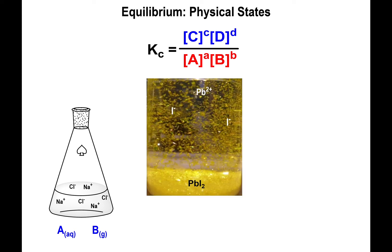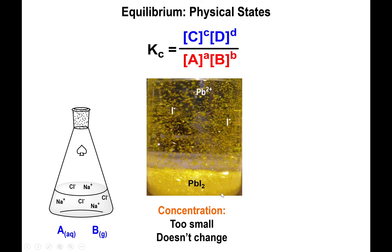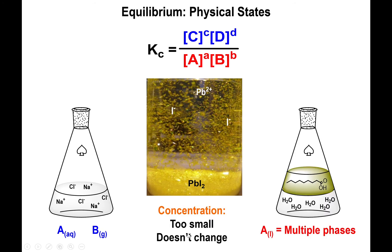However, insoluble solids — like lead iodide, which solubility rules predict as insoluble — will have a very small, essentially constant concentration in solution. Because that concentration doesn't really change, we don't treat solids in the equilibrium expression; it's too small and effectively constant.